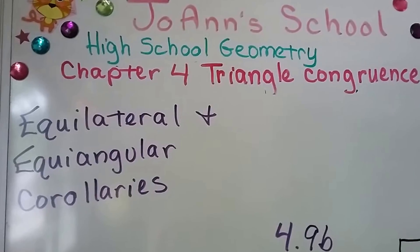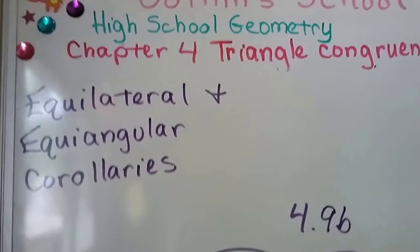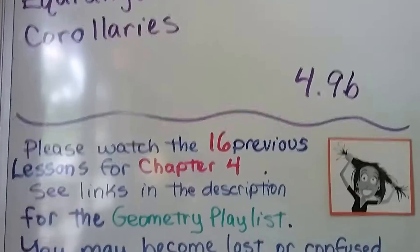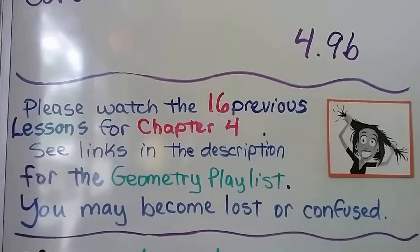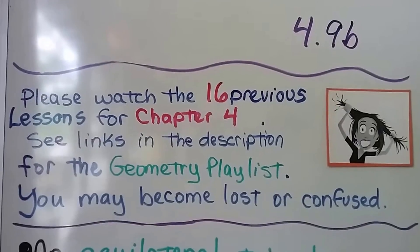Equilateral and equiangular corollaries. This is 4.9b. We've got 16 previous videos that are in chapter 4. If you go to the description, there's the geometry playlist.